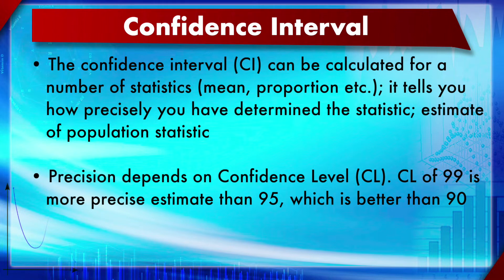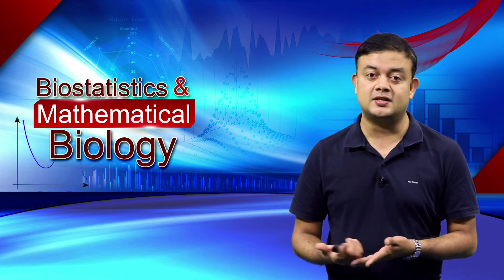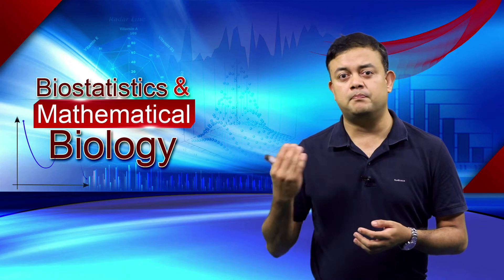The confidence interval of the mean: precision depends on the confidence level. A confidence level of 99 is a more precise estimate than 95, which is better than 90. Accuracy is increased when you increase the confidence level. More accurately, it is called accuracy rather than precision, since accuracy is more important than precision in statistics. If you have a large sample, you can make a better guess, so the confidence level will be higher. People always prefer higher confidence levels.